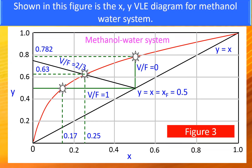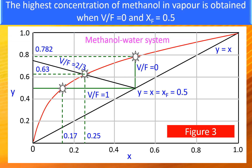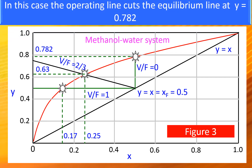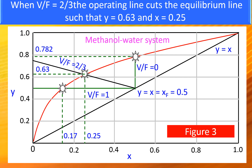Shown in this figure is an XY McCabe-Thiele diagram for the methanol-water system. We have plotted the operating lines for the three cases with X = Y = Xf and slopes of -infinity, -1/2, and 0. The highest concentration of methanol in the vapor is obtained when V/F = 0 and Xf = 0.5; the operating line cuts the equilibrium line at Y = 0.782. The lowest liquid concentration is obtained when V/F = 1 (slope = 0); at Xf = 0.5, the liquid concentration X = 0.17. When V/F = 2/3, the operating line cuts the equilibrium line such that Y = 0.63 and X = 0.25.